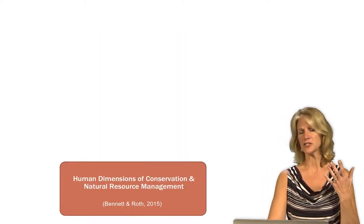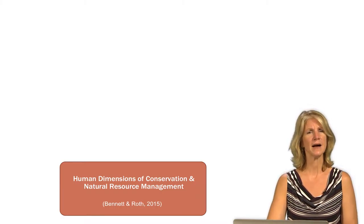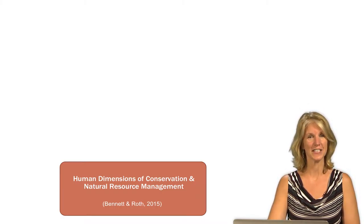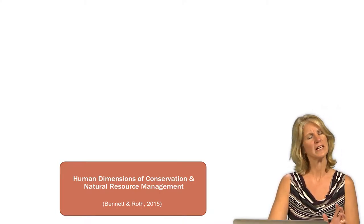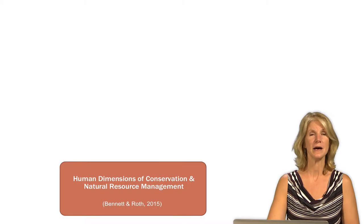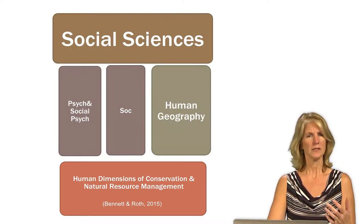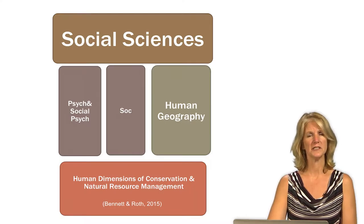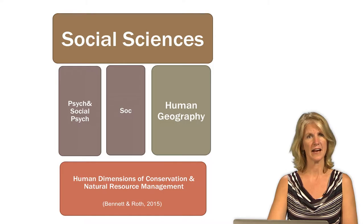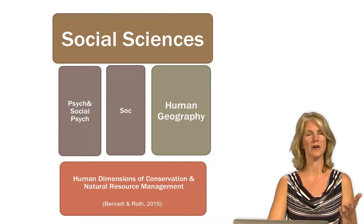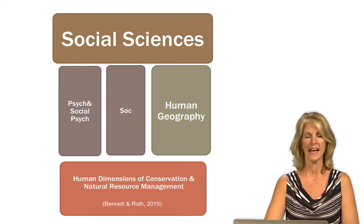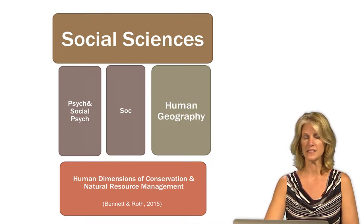These influences can be understood from a variety of perspectives encompassed in the human dimensions of conservation and natural resource management. Recall earlier in the semester when we introduced you to, or perhaps reminded you of, the number of disciplines involved in this. Social Psychology, Psychology, Sociology, and Human Geography — each uses different theories and methods that align with it. As you've prepared your assignments this semester, you've most likely encountered one or more of these disciplines and been exposed to their methods and theories.